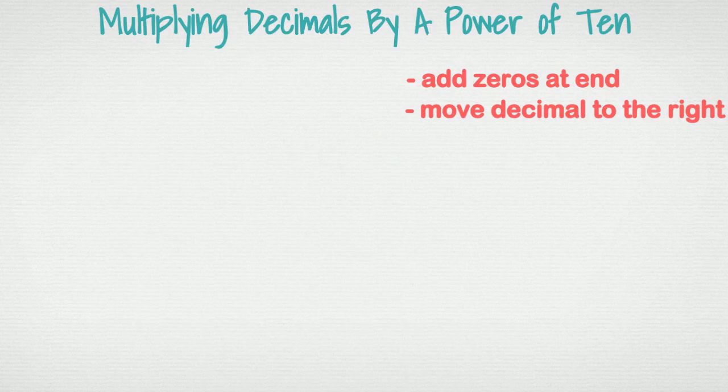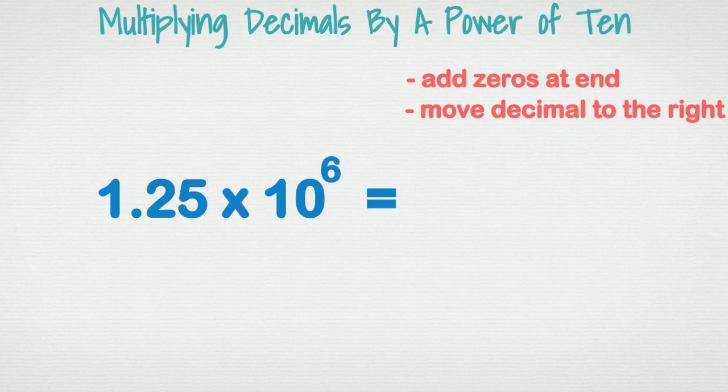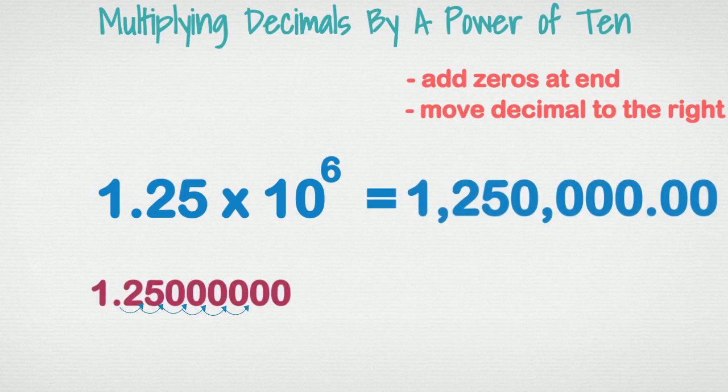Next example: 1.25 times ten to the sixth. We write our original number down, we add some zeros, and we move the decimal place six spaces to the right. Our answer is one million two hundred fifty thousand.